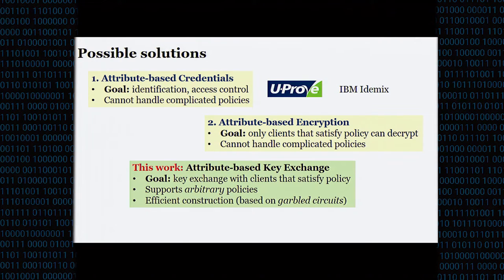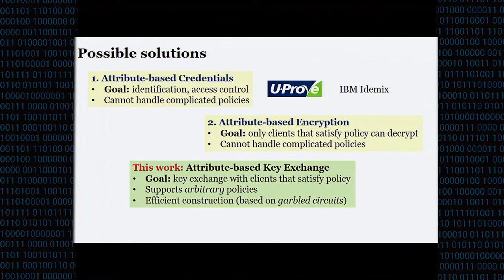In this work, we introduce a notion that we call attribute-based key exchange. The idea is that a server and client can establish a secure channel if the client's attributes satisfy the server's policy. Our construction supports arbitrary policies efficiently — by arbitrary, I mean polynomial-size Boolean circuits. We implement it and show an efficient construction based on garbled circuits from the 2PC literature.